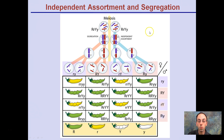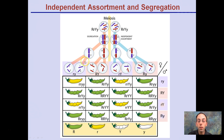This is how it looks — independent assortment and segregation are both represented in our dihybrid cross here. These are the symbols for female and male, and you can see our segregation and independent assortment illustrated here.